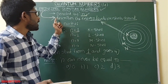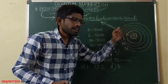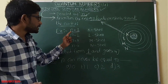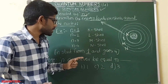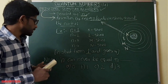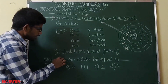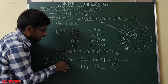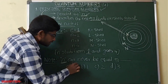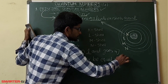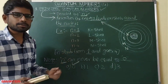So, the principal quantum number is denoted by small n and it describes the energy levels or shells around the nucleus. n starts from 1 and goes to 4. The small n can never be equal to 0 — it always starts from 1.